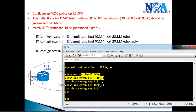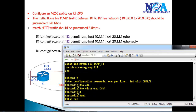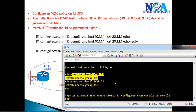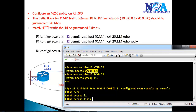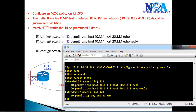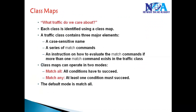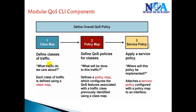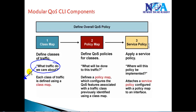Using 'show run class-map' we can see the class maps created. We remove the test 'ccna' class map using 'no class-map ccna'. Class map 'icmp' matches ACL 112 representing ICMP traffic, and class map 'http' matches ACL 120 representing HTTP traffic from the 10.x to 20.x network. Generally we use two or three classifications. The first step of implementing QoS — defining class maps — is now complete.